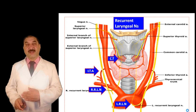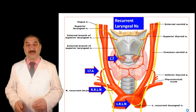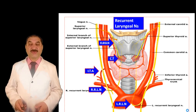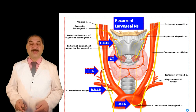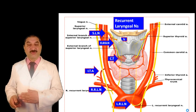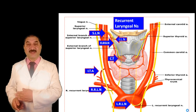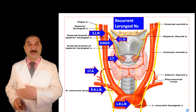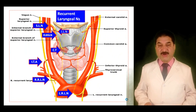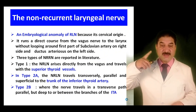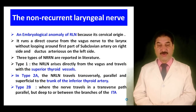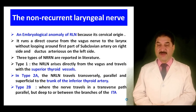The external laryngeal branch of the superior laryngeal nerve is related to the superior thyroid artery, which should be ligated as close as possible to the upper pole of the thyroid gland. The superior laryngeal nerve also gives the internal laryngeal branch, related to the superior laryngeal vessels; these vessels pierce the cricothyroid membrane to enter the laryngeal cavity. The non-recurrent laryngeal nerve is an embryological anomaly of the recurrent laryngeal nerve, running a direct course from the vagus to the larynx without looping around the first part of the subclavian artery on the right or the ductus arteriosus on the left.